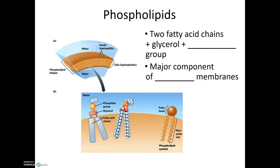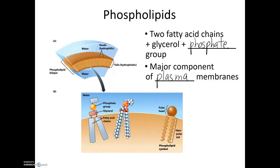Not all lipids are triglycerides. Another molecule known as a phospholipid is similar to a triglyceride in some ways but very different in others. Phospholipids have two fatty acid chains connected to the glycerol, but in place of the third fatty acid chain there is a phosphate group. Phosphates are very hydrophilic, whereas fatty acid chains are very hydrophobic. So the head of the molecule where the phosphate is found is hydrophilic, while the two fatty acid tails are hydrophobic. Phospholipids make up a major component of plasma membranes.